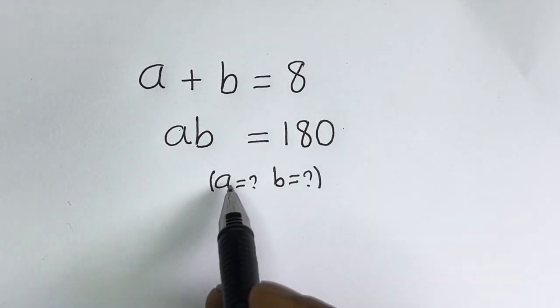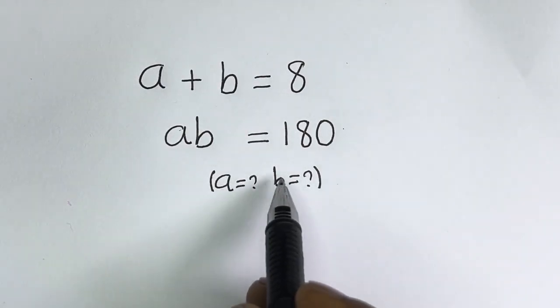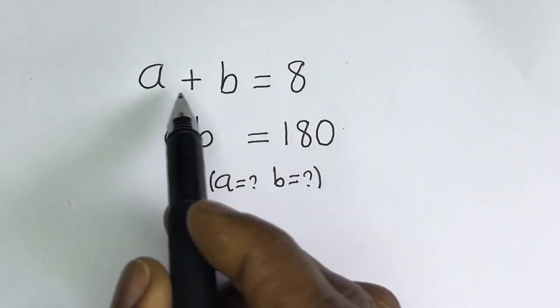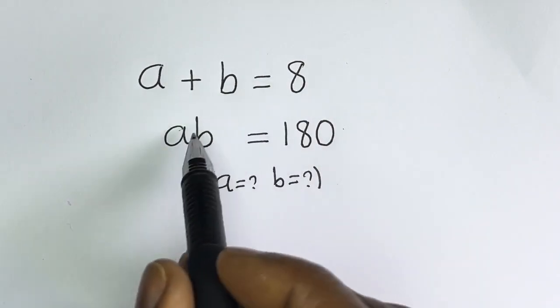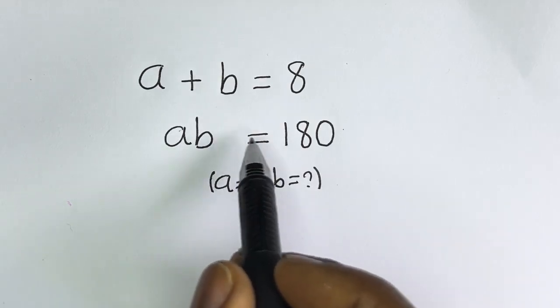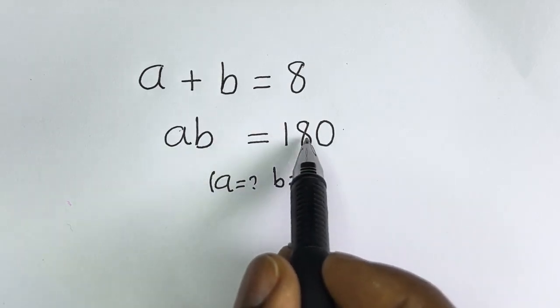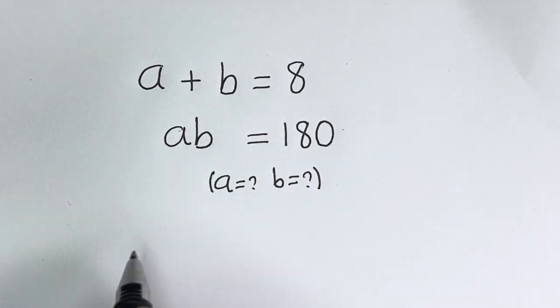Hello, how to solve for A and B in this equation: A plus B is equal to 8, and AB is equal to 180.